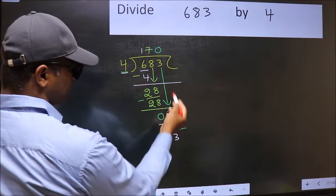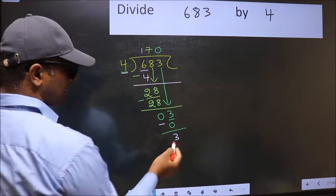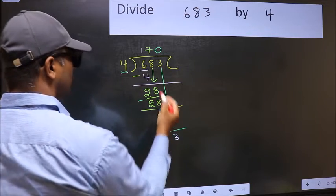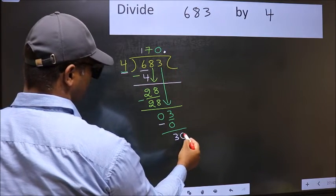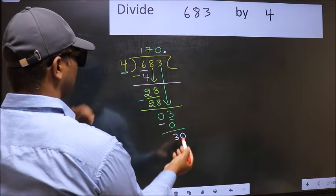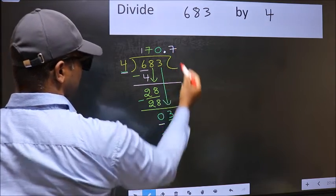Over here, we did not bring any number down, and 3 is smaller than 4. So now you can put a dot and take 0. So 30. A number close to 30 in the 4 table is 4 sevens, 28.